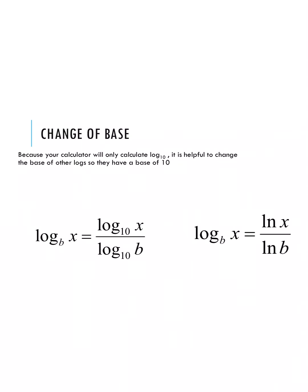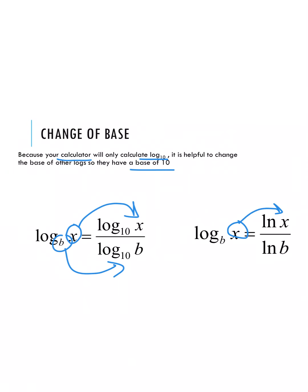The change of base formula is used to evaluate logs when our calculator can't, since calculators can only evaluate log base 10. The formula: log base b of x is rewritten as log base 10 of x divided by log base 10 of b — the value x goes to the numerator, and the base b goes to the denominator. This can also be written using natural logs: natural log of x divided by natural log of b. By doing this, we can quickly evaluate any log that is not base 10 using a calculator.